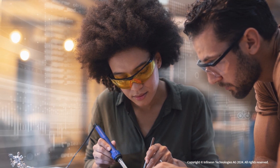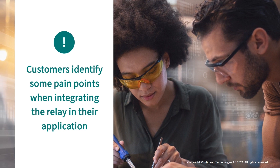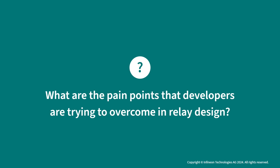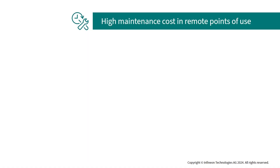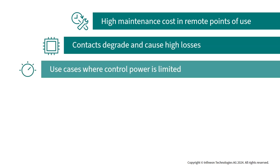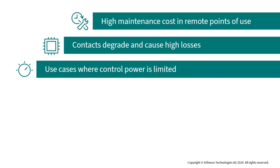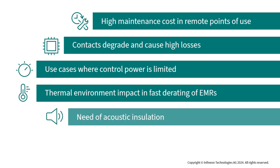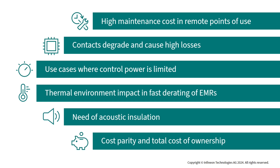Despite several advantages of using relays, customers identify some pain points when integrating the relay into their application. These include: high maintenance cost and remote points of use; contacts that degrade over time causing higher losses; limited application use cases where control power is limited; thermal environment impact and fast derating of electromechanical relays (EMRs); the need for acoustic insulation as EMR clicks are too loud; and cost parity issues in system costs for heat sink elimination and total cost of ownership for maintenance, replacement, and downtime.